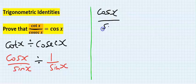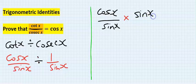Cos x over sine x - I will change this divide to multiplication and it will inverse the other side, which is sine x over 1, instead of 1 over sine x.